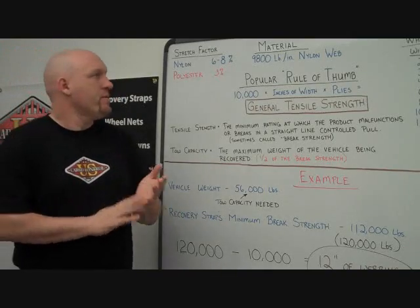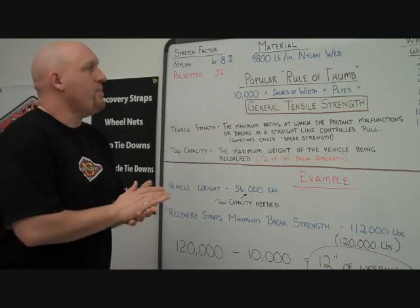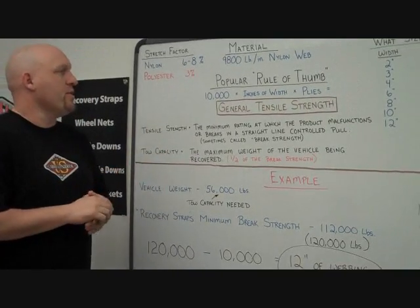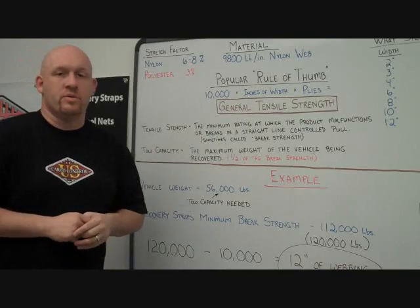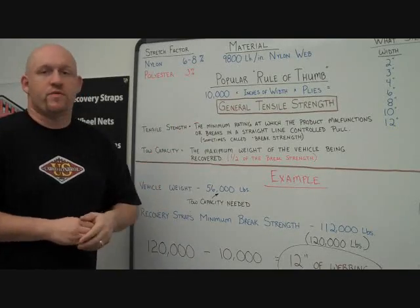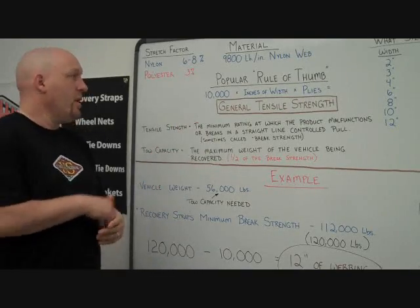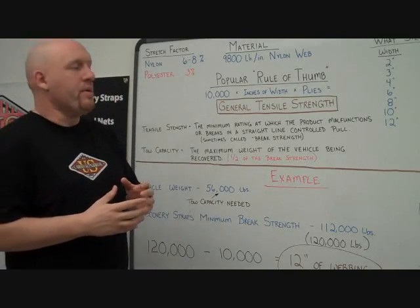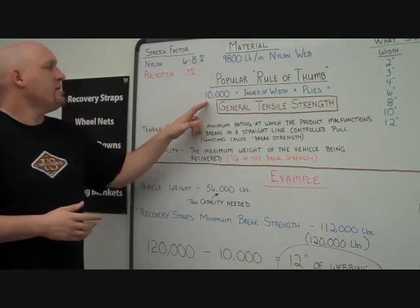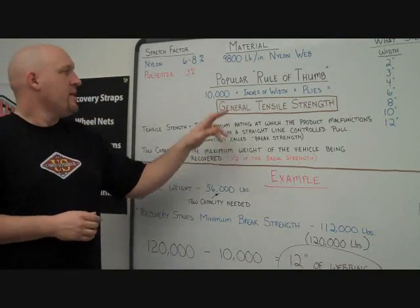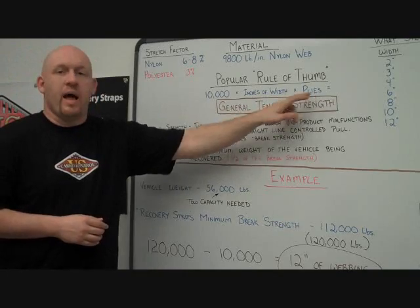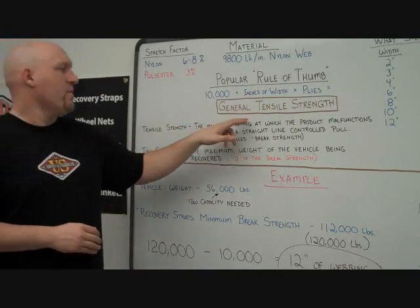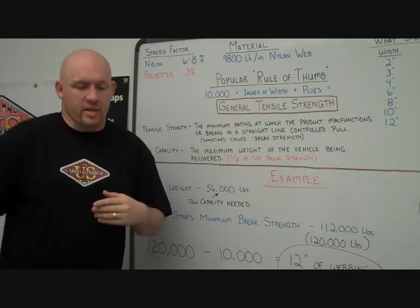The material that we use for recovery straps is a 9,800 pound per inch nylon web, which in most cases we'll round up to 10,000 pounds just for easy calculation purposes. A general rule of thumb for figuring out what size recovery strap you need is taking the 10,000 pound rating times the inches of width times the number of plies or layers. That will give you the general tensile strength of the entire strap.